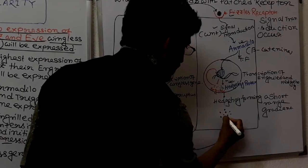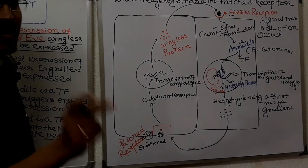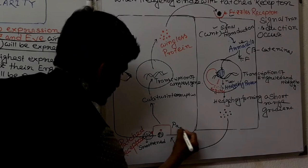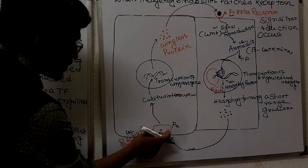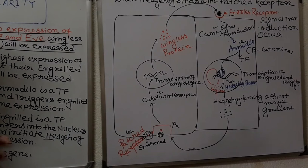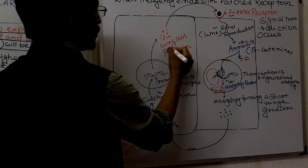The hedgehog protein binds to nearby cells of the segment via a receptor called the patched receptor. Hedgehog binds into the patched receptor, and after this binding, signal transduction occurs. Cubitus interruptus then regulates the transcription of the wingless gene. Wingless is transcribed and translated to produce wingless protein, which then binds into the frizzled receptor.